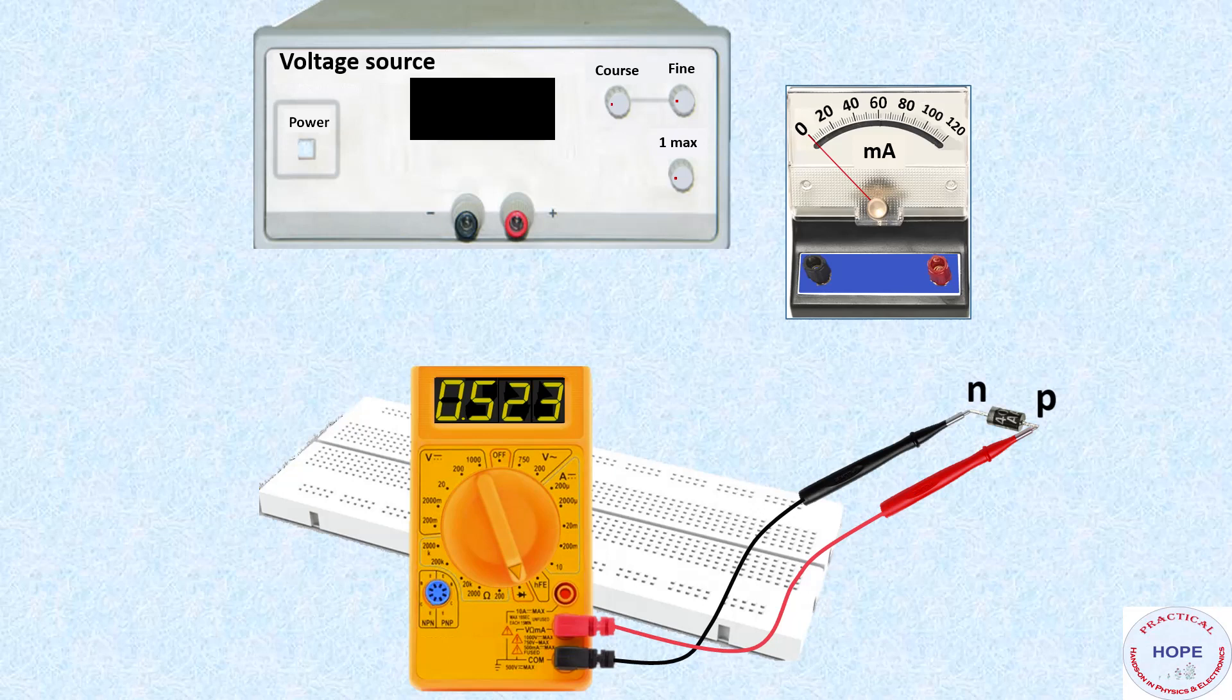In the present case, it shows 0.523. So this diode is working perfectly fine. A diode showing same reading in both forward and reverse directions should not be used.